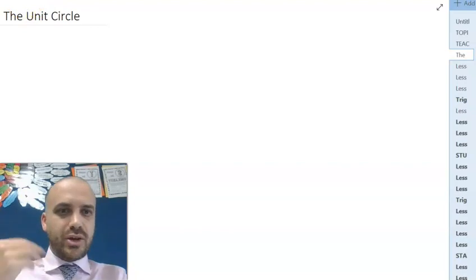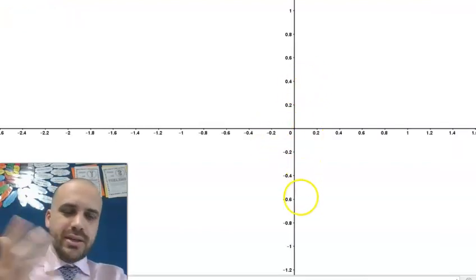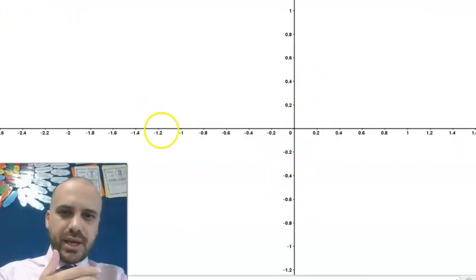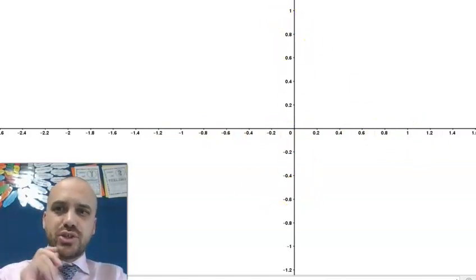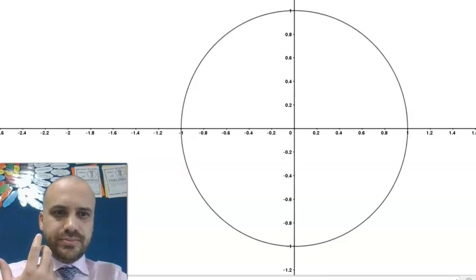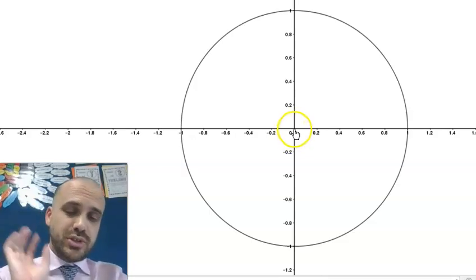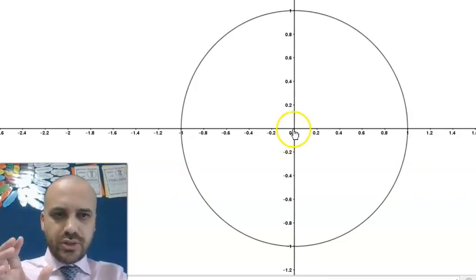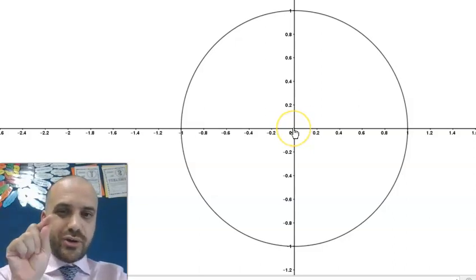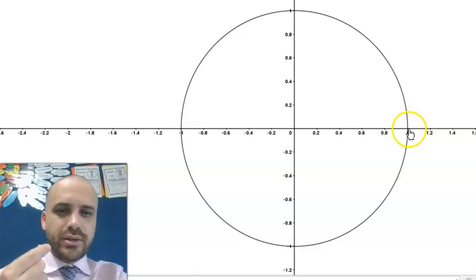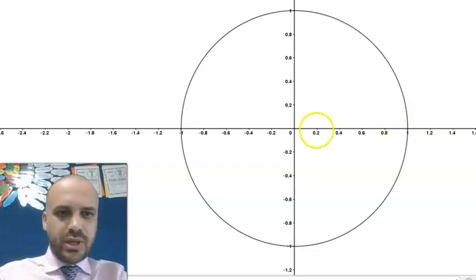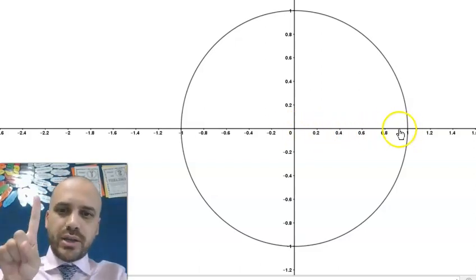So we're going to start over here, a Cartesian plane. Now you're used to a Cartesian plane, an x-axis, a y-axis. Now we're going to draw a circle on our Cartesian plane. This is the unit circle. The unit circle has a center at the origin at 0, 0 and you can see that it has a radius of 1. It's called the unit circle because its radius is 1 unit.